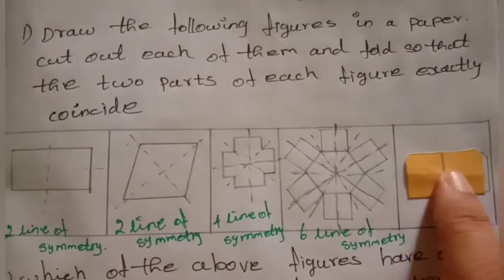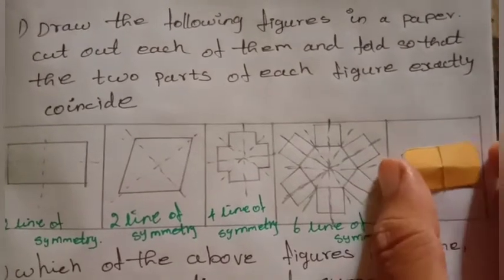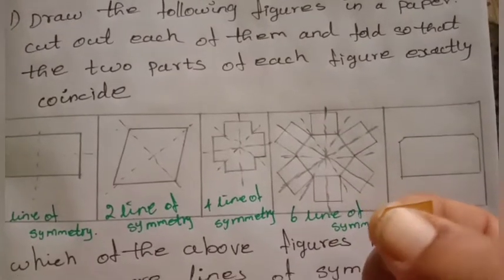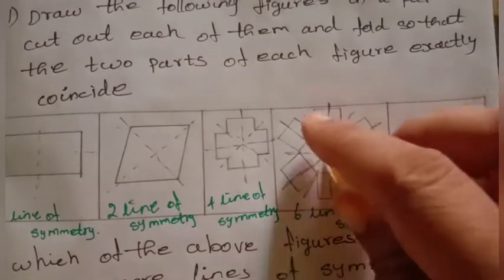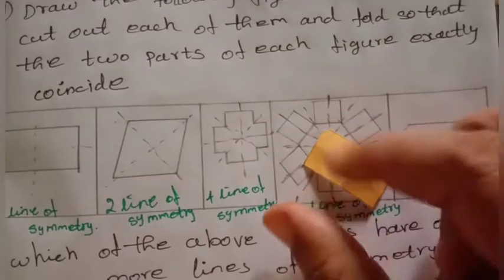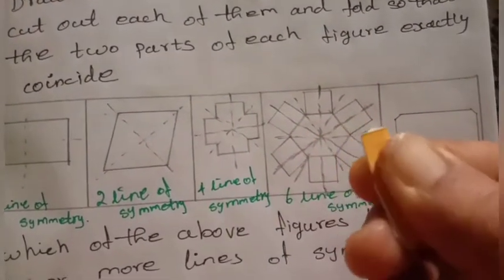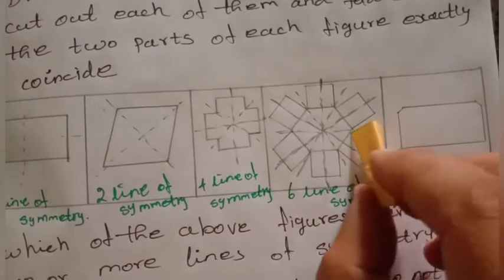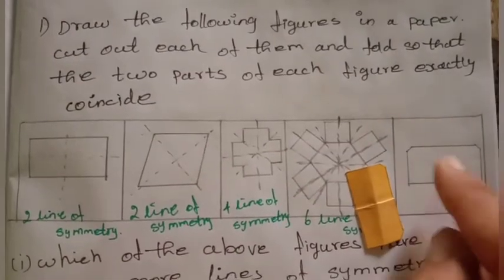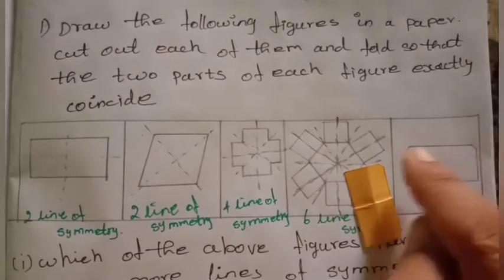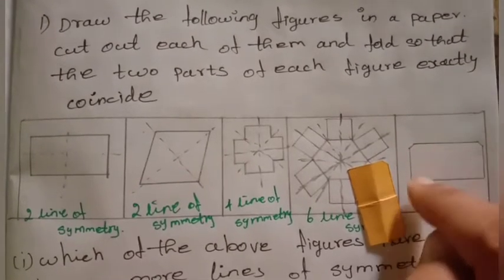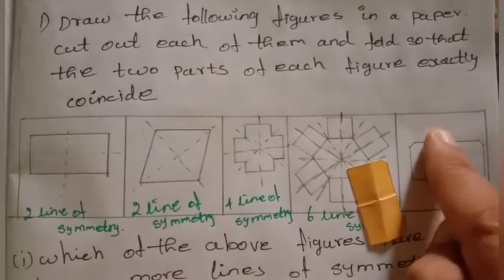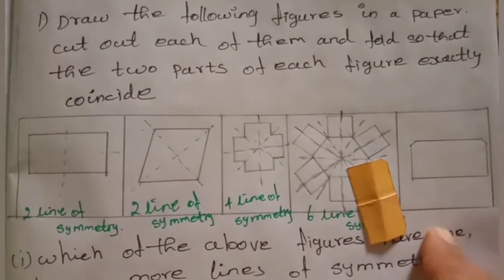Next, in the same way, we have to make a vertical line with two sides equal. In this figure, we have to make two sides equal. Now, we have to make a horizontal line and make two sides equal. So we have to make two equal sides on the same side. This is a rectangle, so we make a vertical line — that gives us the lines of symmetry.